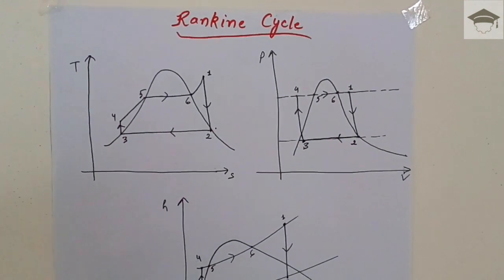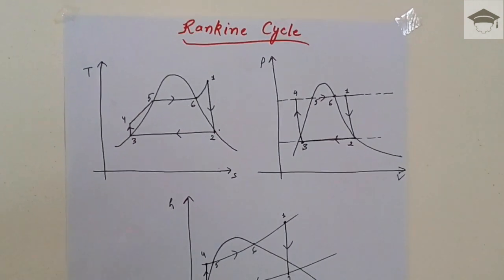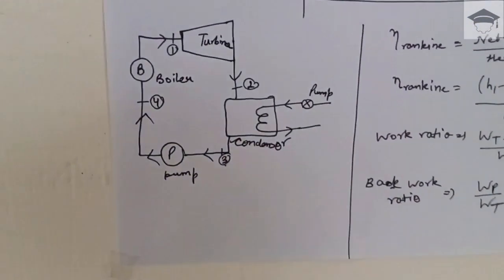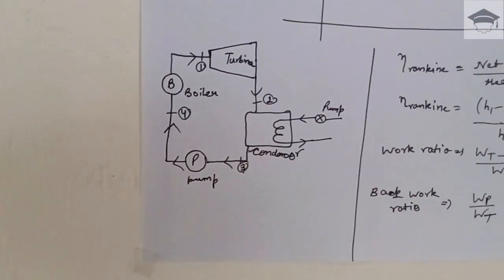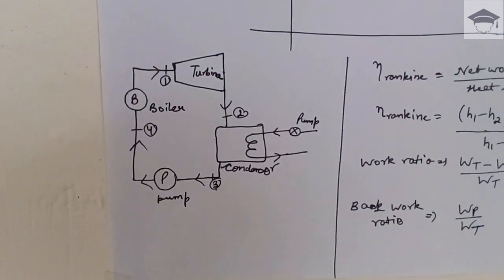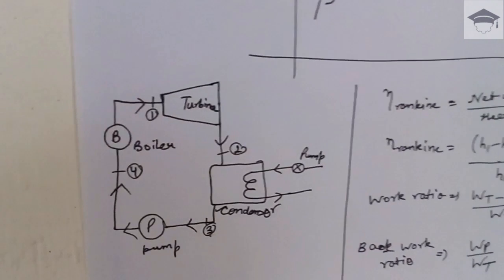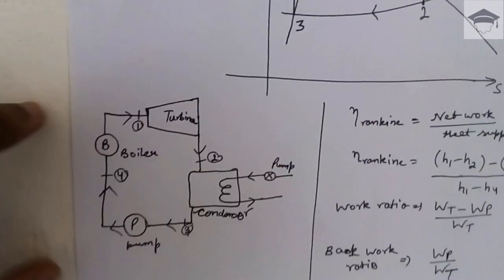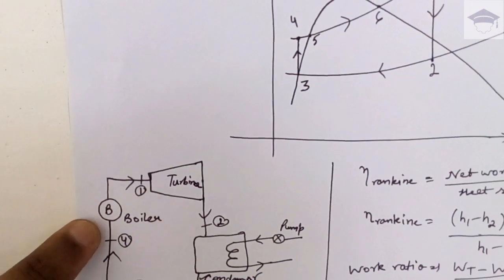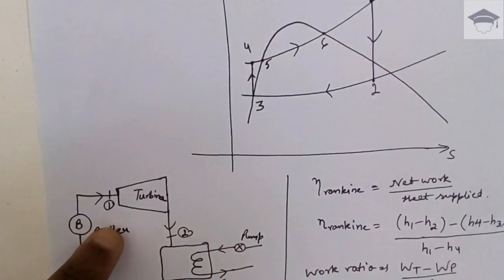The Rankine cycle employs a boiler, turbine, condenser, and pump — these are the four main components. Steam is the working fluid. In the boiler, heat is supplied at constant pressure and steam is generated. This steam is then made to pass through the turbine, where the turbine does work.